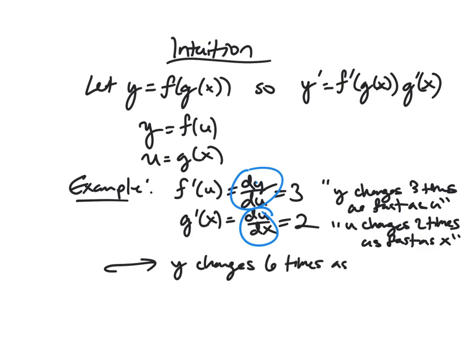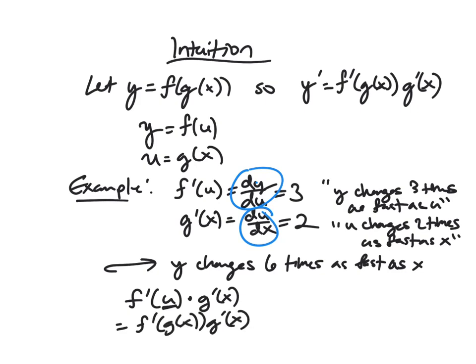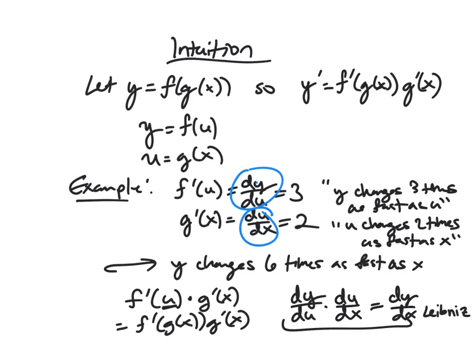So if y changes three times as fast as u, and u changes two times as fast as x, then just using the transitive property, we get that y changes six times as fast as x. That's exactly f prime of u times g prime of x, which is f prime of g of x times g prime of x. In Leibniz notation, dy/du times du/dx equals dy/dx. These are not literally fractions, but this is a case where you can kind of pretend cancellation is going on.